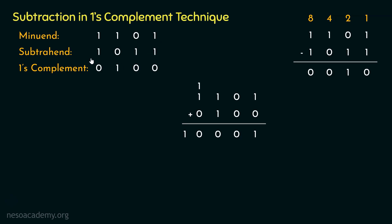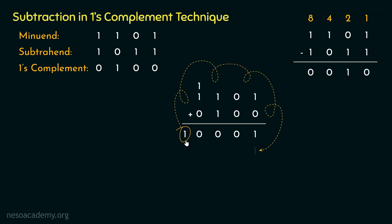From a minuend of 4 bits and subtrahend of 4 bits, the subtraction result should not exceed 4 bits. Yet we got a carry. In one's complement technique this is acceptable — we don't discard the carry. Instead, we take it and place it at the least significant bit position to add with the remaining bits. This carry is called EAC or end-around carry, since we are end-arounding the carry.